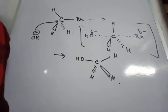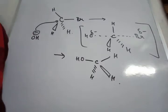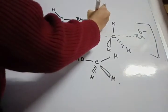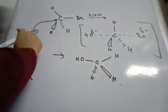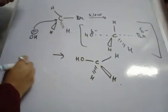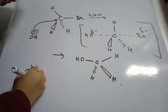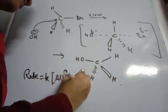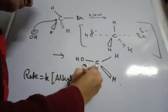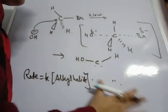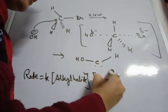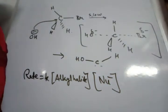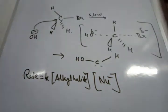This reaction is a bimolecular reaction — that is why it is called SN2. In the slow step, both the nucleophile and the alkyl halide are involved. So the rate is proportional to the concentration of the alkyl halide and the incoming nucleophile (Nu⁻). Since two molecules are involved — the nucleophile and the alkyl halide — it is a bimolecular, single-step reaction.